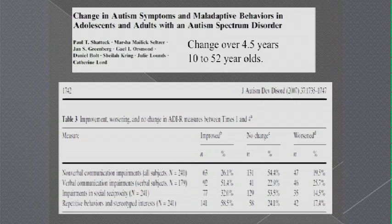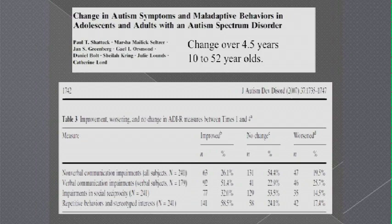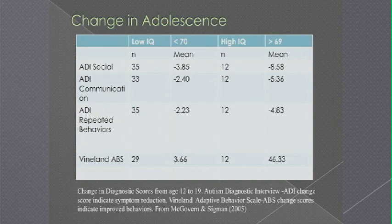We also see symptom change — people with autism continue to improve. For me, that suggests there is a huge window of opportunity because there is plasticity, they're changing, and if we do figure out other things to do, that change can be accelerated. This data from Marion Sigmund — she was perhaps the first to notice this — shows it's true for children affected by intellectual disabilities as well as children above that range. These negatives mean symptoms are decreasing, and it happens across groups of children.